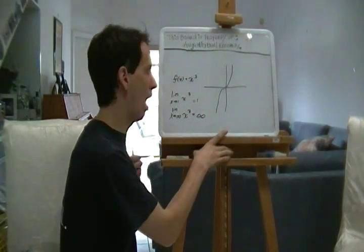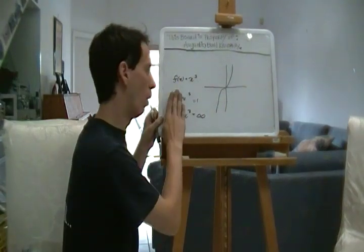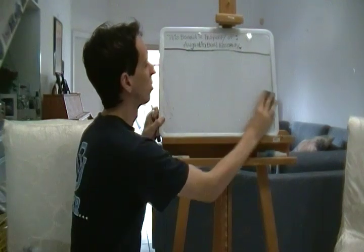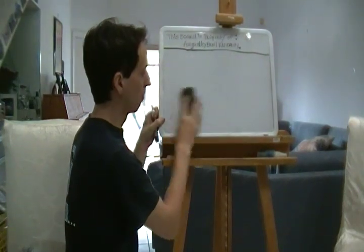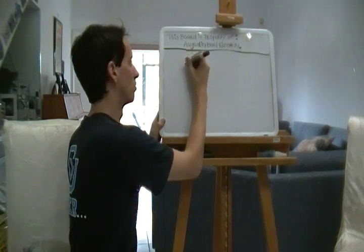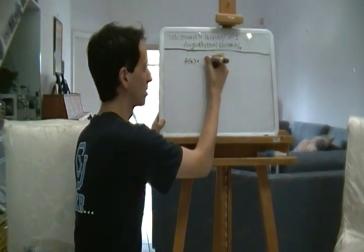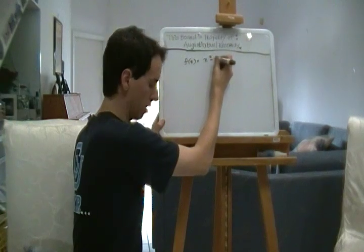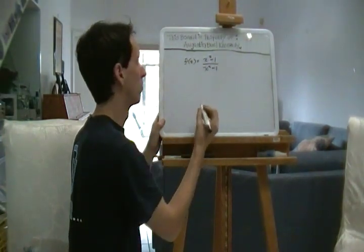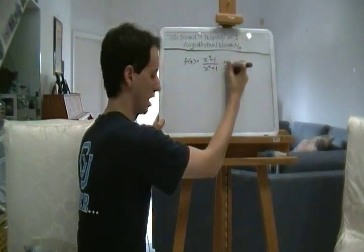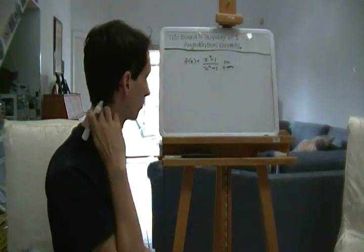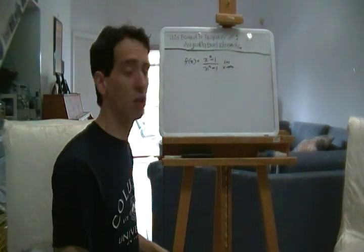You might be wondering, why would this ever be useful? Well, there are ways to make it useful. Let's look at the following example. f of x equals x squared minus 1 over x squared plus 1. And I want to know the limit as x approaches infinity. Can you tell me that?